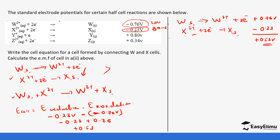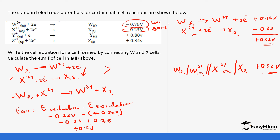If you were to write the cell notation for the cell made from these two half cells, it would be: W solid | W²⁺ (aq) || X⁺ (aq) | X solid, with E cell = +0.53 volts. Always put the E cell in the cell notation or in the final equation to be on the safe side, especially when doing your final exams.